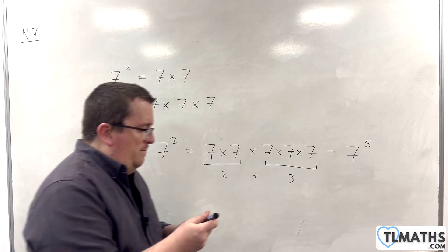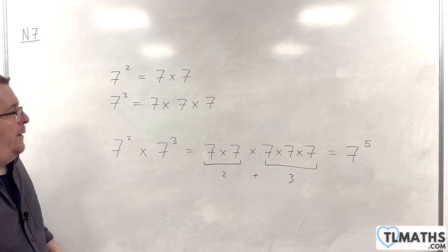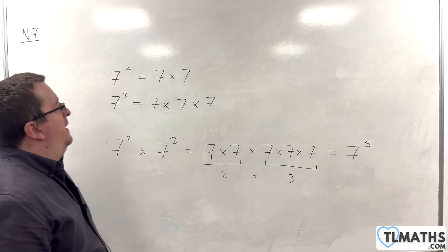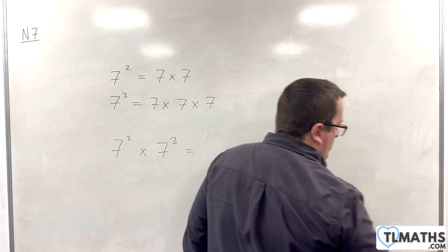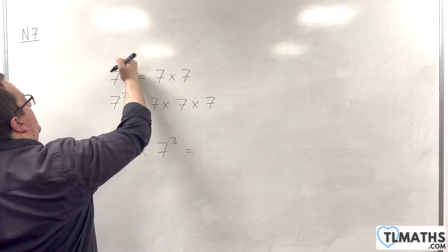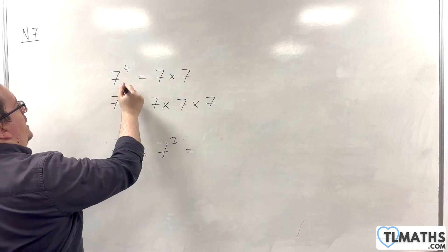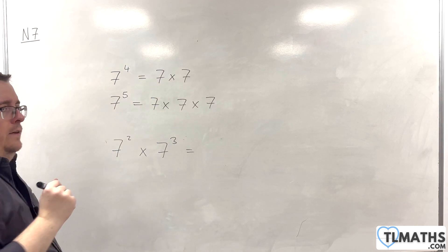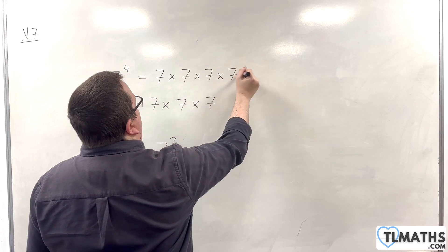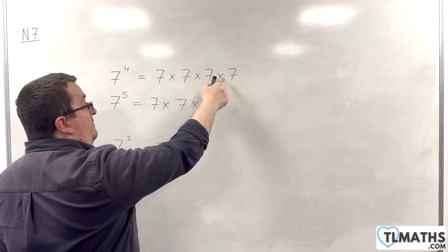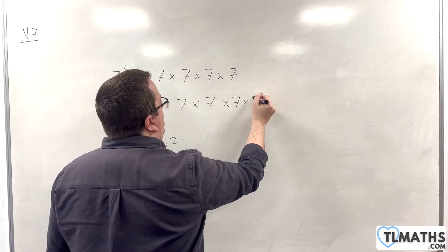But this seems maybe it's just a coincidence — maybe that's not how it works generally. So let's change it up a little bit. If instead we had 7 to the 4 and 7 to the 5: 7 to the 4 is 7 times 7 times 7 times 7, and 7 to the 5 is 7 times 7 times 7 times 7 times 7.